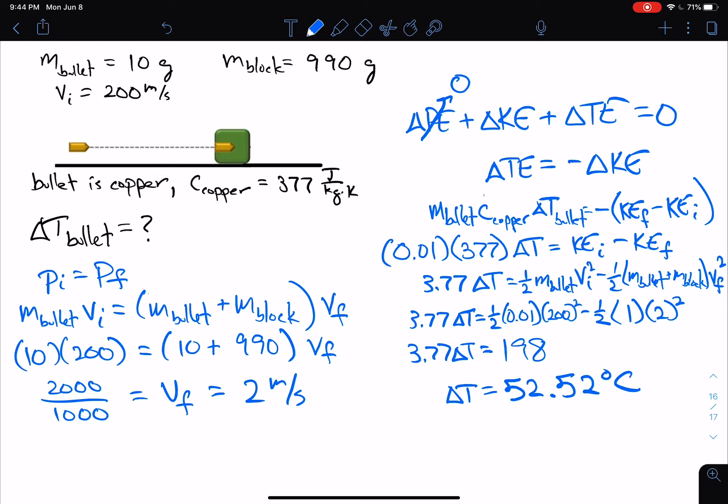Now I chose to write degrees Celsius, but let me just add, I could have also said 52.52 Kelvin. Because we're talking about temperature change. When you're talking about temperature change, a temperature change of 1 degree Celsius is the same as a temperature change of 1 Kelvin. So as long as you're talking about temperature change, it doesn't matter if you put Celsius or Kelvin. It's the same. It only matters if you're talking about the actual temperature. I'm not saying the actual temperature of the bullet is 52.52 degrees Celsius, nor am I saying it's 52.52 Kelvin. I'm saying the temperature changed by this much. Thus, we can use degrees Celsius or Kelvin.